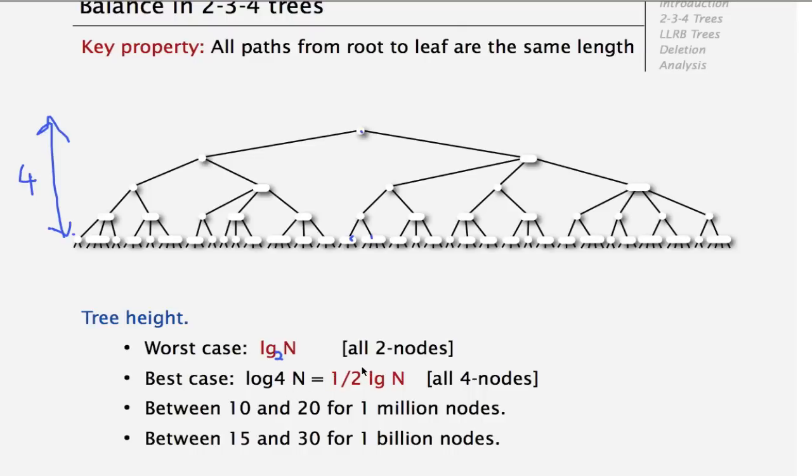And if all of the nodes are 4-nodes, so then that's the best case because the tree would be the shallowest, then we have that the depth is half log N. So it basically will take us between, we'll have between 10 and 20 levels if we have 1 million nodes and between 15 and 30 if we have 1 billion nodes. So that's why this is the guarantee that we get when we are searching for elements in the tree. We'll at most have 20 steps if it's a million and at most 30 steps if it's a billion. Amen.